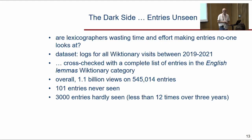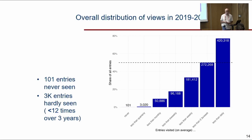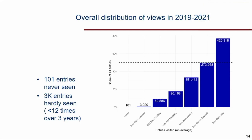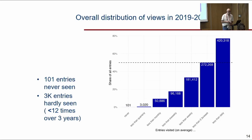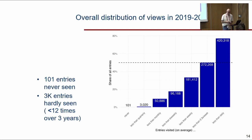If we raise the bar and ask about entries visited extremely rarely — say 12 times over three years, or once a quarter — that becomes about 3,000 entries. This is a plot of how many entries are visited less than a certain frequency. The median entry has been viewed on average 2.3 times a week — about 10 times a month or every three days.